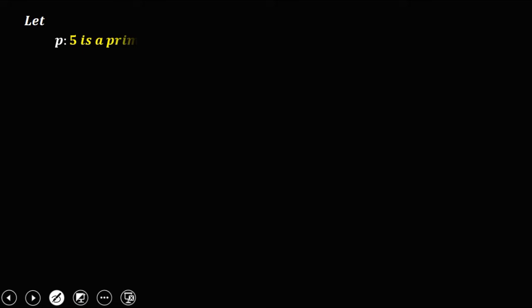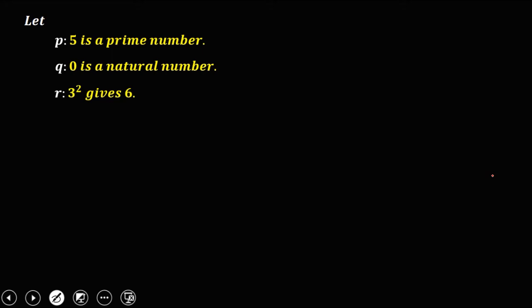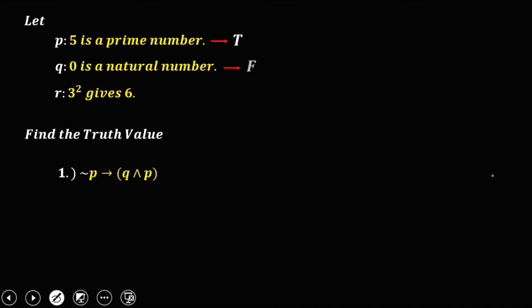For this given, let p = '5 is a prime number', q = '0 is a natural number', and r = '3 squared gives 6'. We need to identify the truth value for every variable. '5 is a prime number' is true. '0 is a natural number' is false, because natural numbers are counting numbers starting with 1, so 0 is not a natural number. '3 squared is 9, not 6', so r is false. So p = true, q = false, r = false.